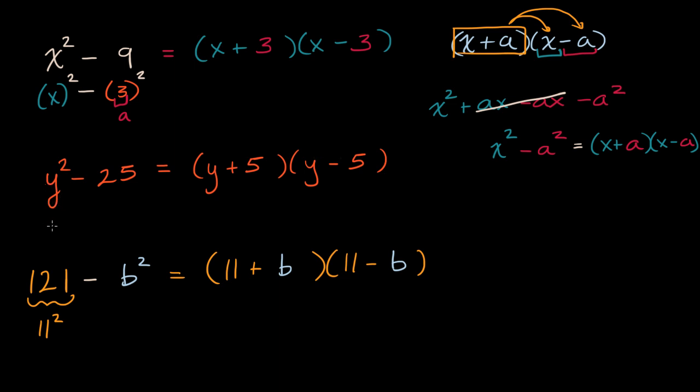Here, y is the thing getting squared, and five is the thing getting squared. Those are what's getting squared in this difference of squares, so it's y plus five times y minus five. I encourage you to try this out. We have a whole practice section on Khan Academy where you can do many more of these to become familiar.